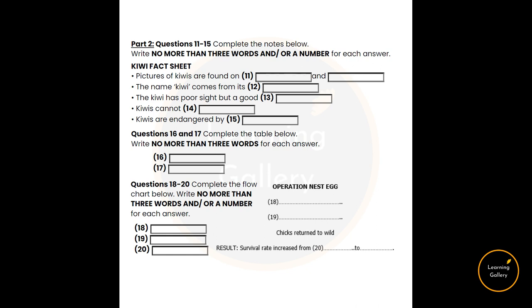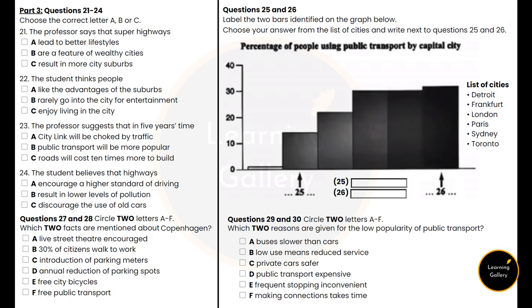That is the end of Section 2. You now have half a minute to check your answers. Now turn to Section 3 on Page 94. In this section, you will hear a discussion between three people in a university tutorial. In the first part of the discussion, they're talking about city traffic and the motor car. First look at questions 21 to 24.